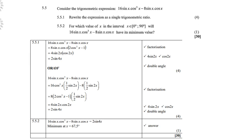5.5: consider the expression 16 sin x cos³x − 8 sin x cos x. Rewrite as a single trig ratio. There is a common factor of 8 sin x cos x, leaving 2cos²x − 1, which is the double angle identity for cos 2x. Multiplying sin 2x by cos 2x gives ½ sin 4x. For 5.5.2: the minimum of 2 sin 4x on the interval 0 to 90° occurs at x = 67.5°.